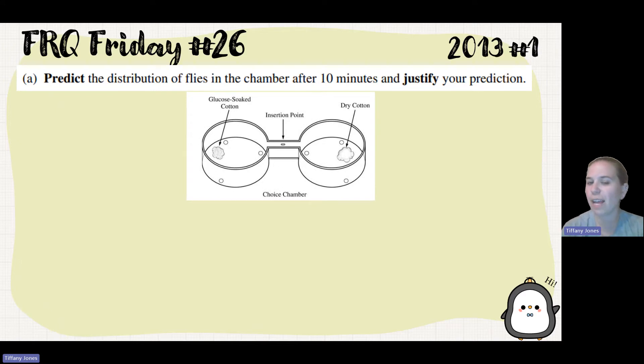Part A asks us to predict the distribution of flies in the chamber after 10 minutes and justify that prediction. So when I think to myself, I say, okay, well, flies, they're going to be drawn to food, and sugar is a type of food.